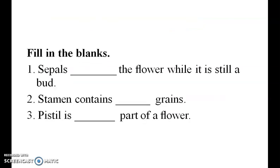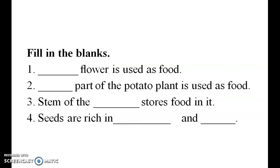Fill up the blanks. First one: sepals protect the flower while it is still a bud. Second one: stamen contains pollen grains. Third one: pistil is the female part of a flower.